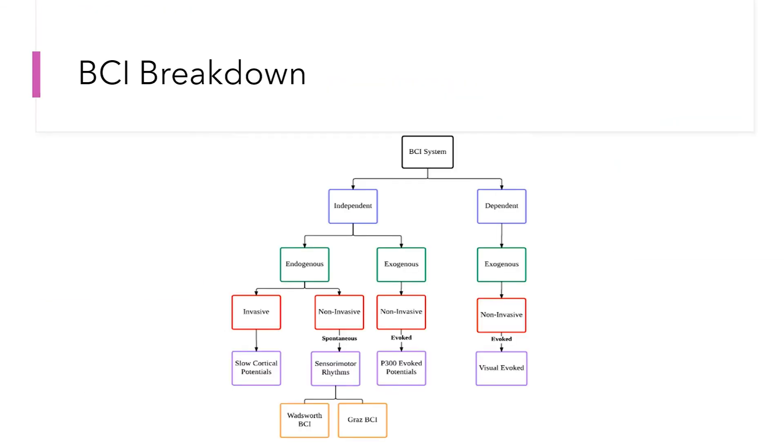According to the literature reviews, BCI divides into two parts, independent and dependent. Dependent means that the BCI does require some control over peripheral nerves and muscles. Yes, it's something like generating a signal via eye-gaze control. With the independent BCI, however, it relies on brain activity.